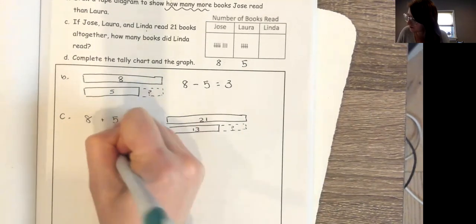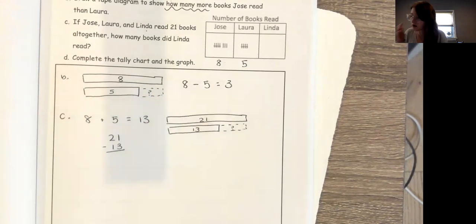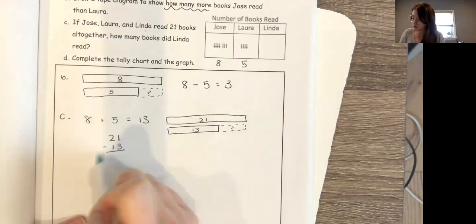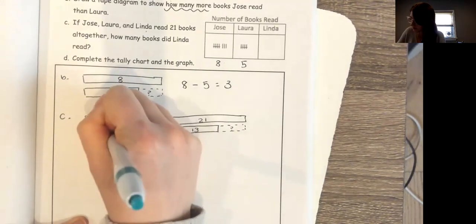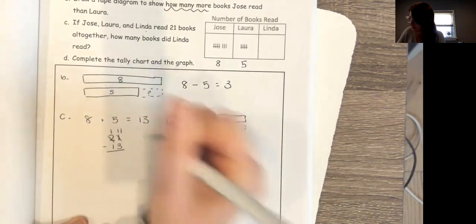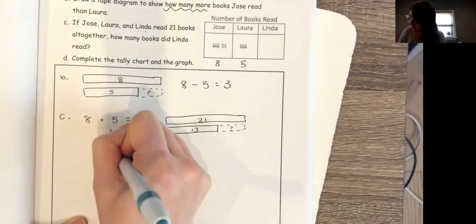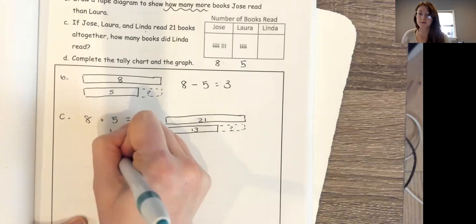So I'm gonna do 21 minus 13 to figure out how many books Linda read. I know I'm gonna start on my ones place. I can't do one take away three, so I'm gonna borrow from my tens. This becomes 11. 11 minus 3, that is 8. 1 minus 1 is 0. So I know that Linda read eight books.